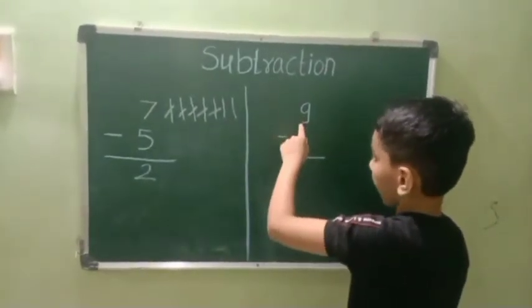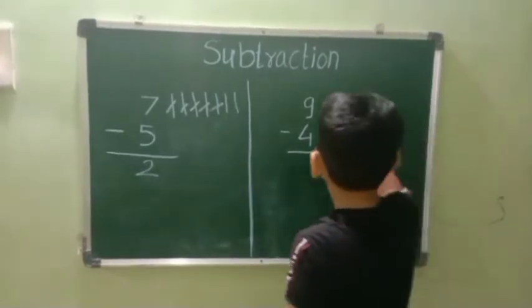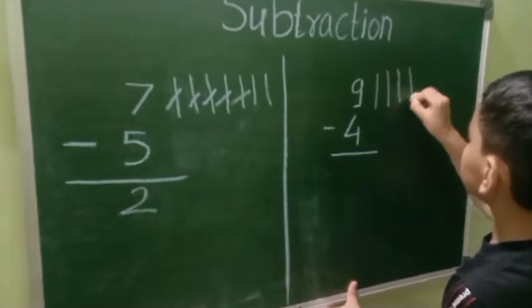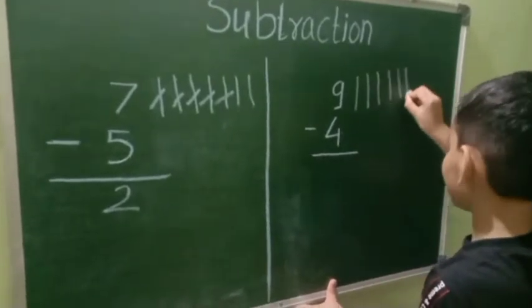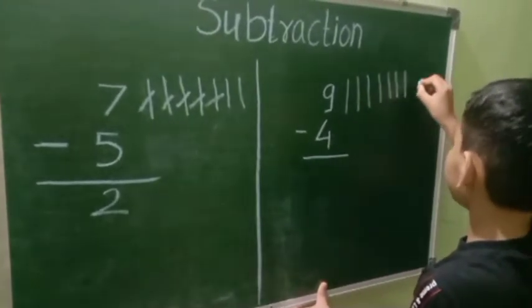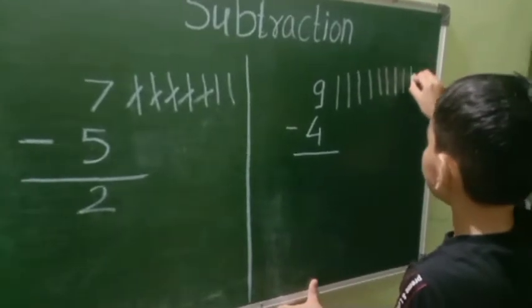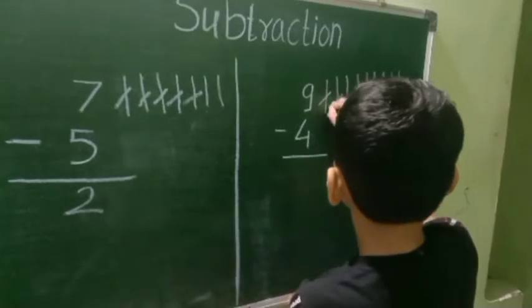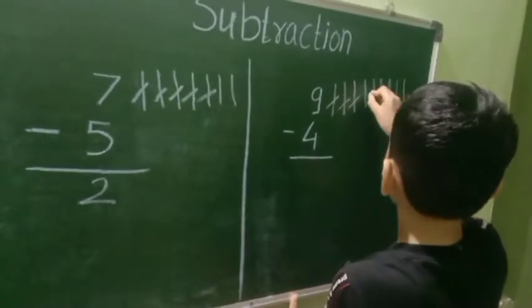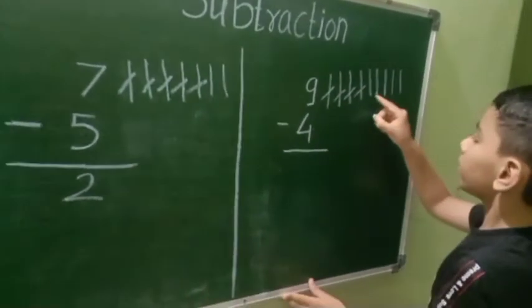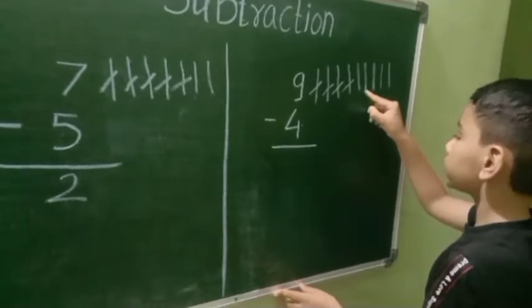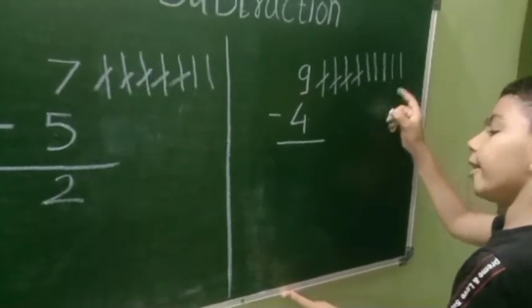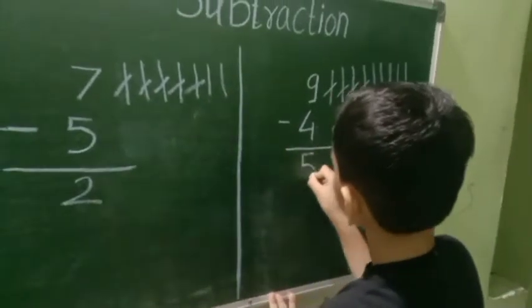Next problem: 9 minus 4. Counting 1, 2, 3, 4, 5, 6, 7, 8, 9. Subtracting 1, 2, 3, 4. Remaining: 1, 2, 3, 4, 5. Our answer is 5.